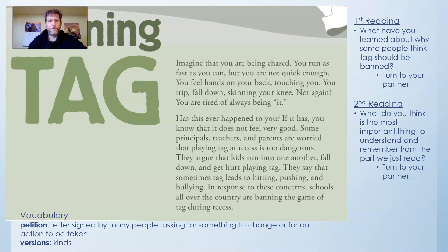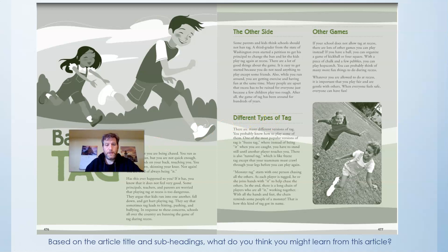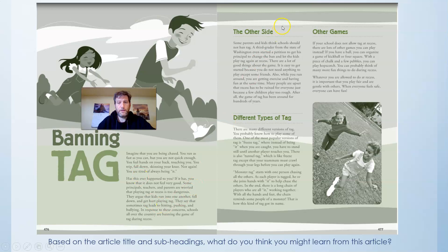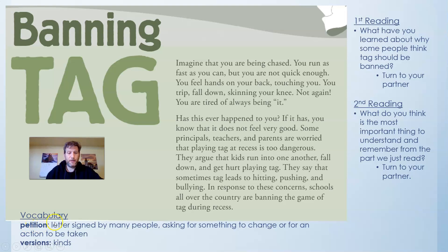We're going to read this article two times. The first time, think about what you're learning. The second time, think about the information you learn in it. The title is Banning Tag, and there are different sections: The Other Side, Different Types of Tag, and Other Games — four sections. Down here, I've put some vocabulary definitions. A petition is a letter signed by many people asking for something to change or for an action to be taken. And versions means different kinds — like different kinds of colors: red, yellow, green — those are all versions of colors. We're going to read this two times, and periodically we'll turn and talk. When I say turn and talk, that's a good time to pause the video and stop and talk to whomever your partner is, whether they're real or imaginary.